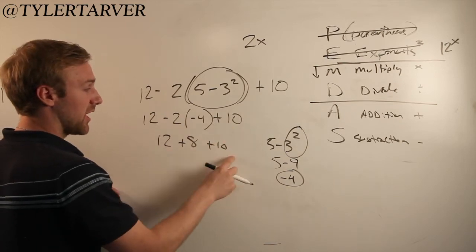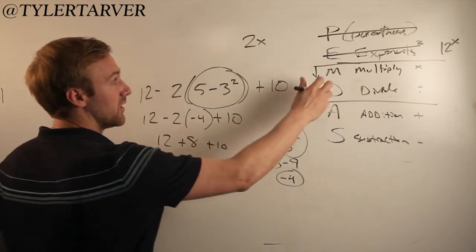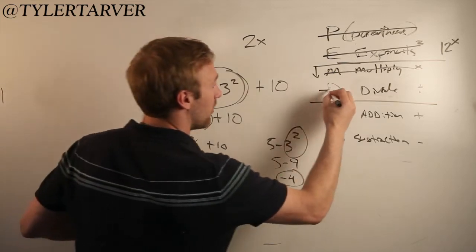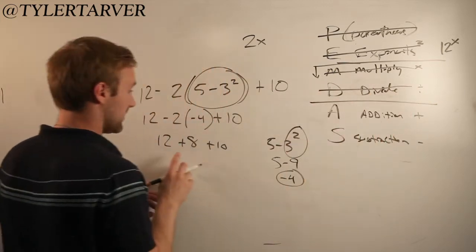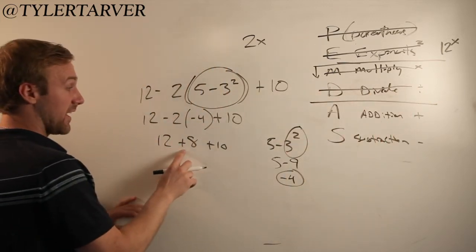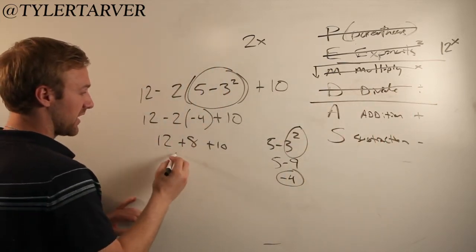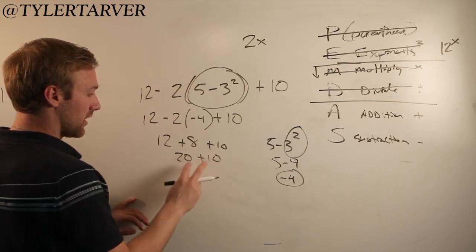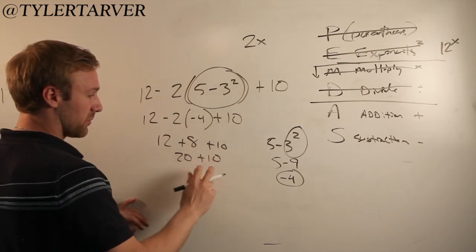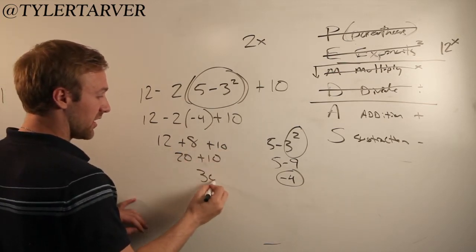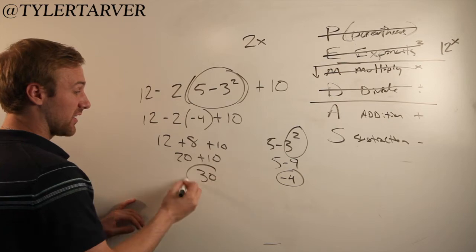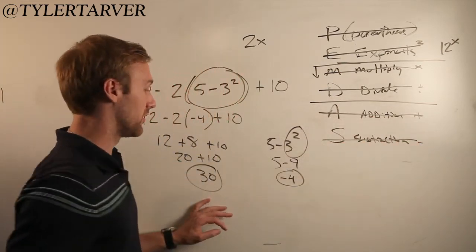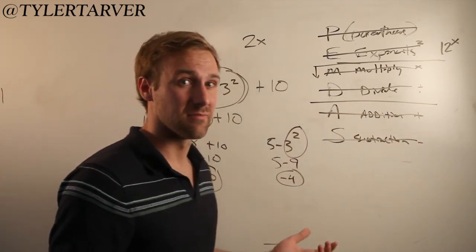Is there anything else to multiply? No. Anything to divide? No. Is there anything to add? Yippers — 12 plus 8 is 20. And then we keep going left to right: 20 plus 10 is 30. And that's the order of operations.